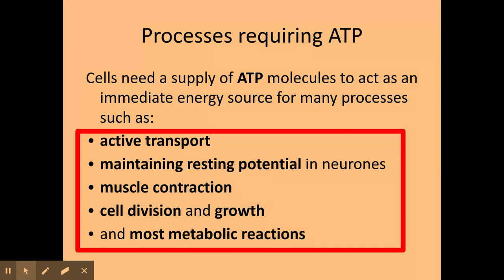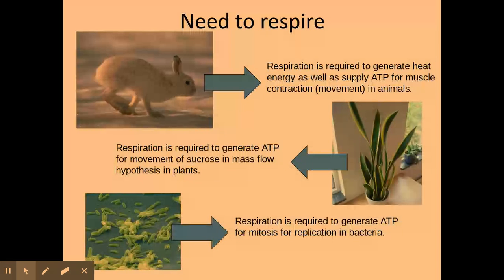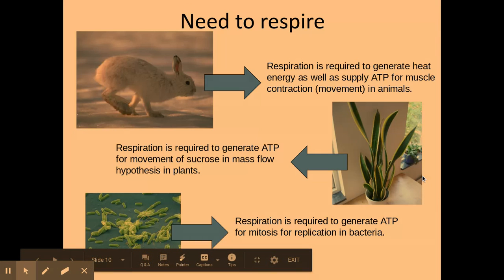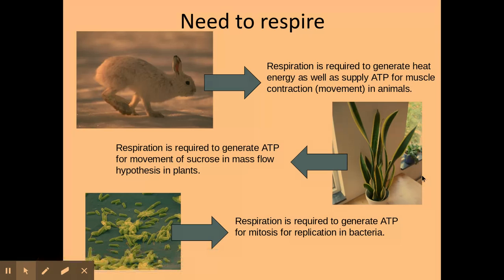Why do different organisms need to respire? In mammals, respiration is required to generate heat, which you looked at in thermal regulation within communication and homeostasis. Plants also carry out respiration — not just photosynthesis. Plants can only photosynthesise in the presence of light, so they often switch to respiration at night-time.